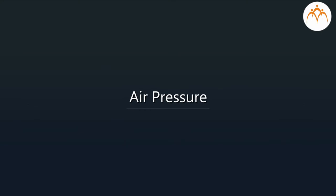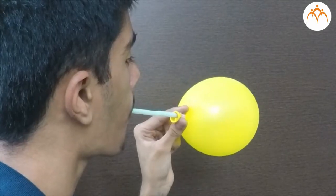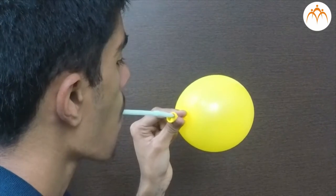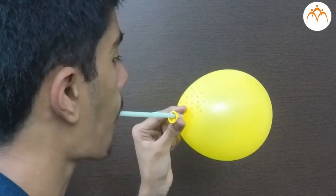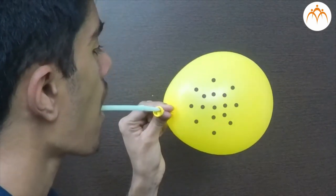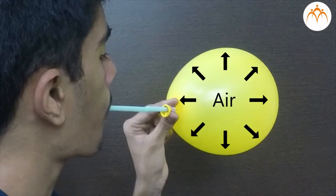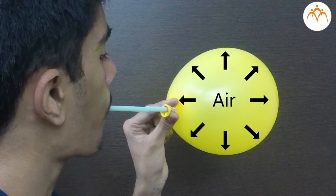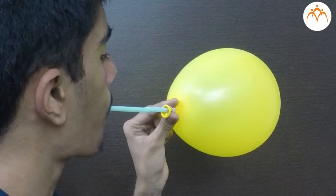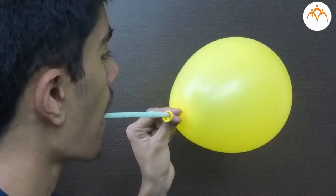Air pressure. When I blow this balloon, I am putting a lot of air inside. Air has lots of molecules. These molecules are moving randomly inside the balloon. These molecules hit the wall of the balloon continuously and exert a force on the wall. Thus pressure is created inside the balloon.